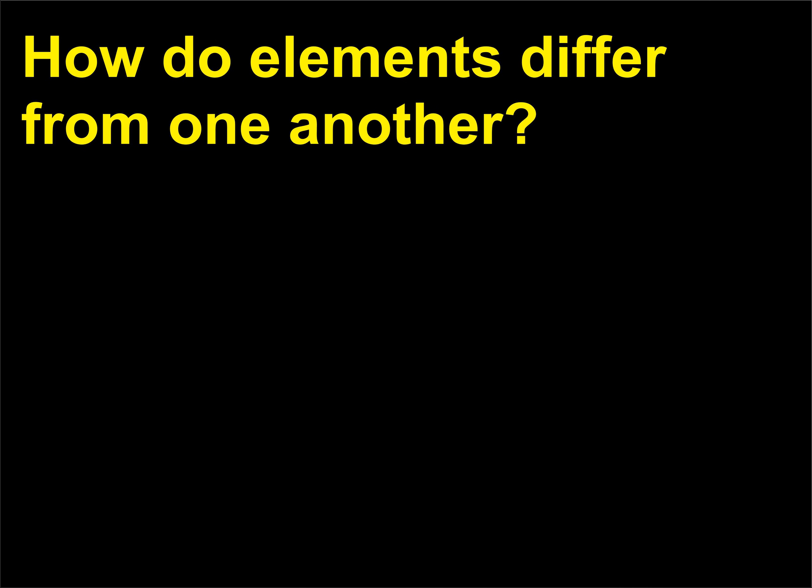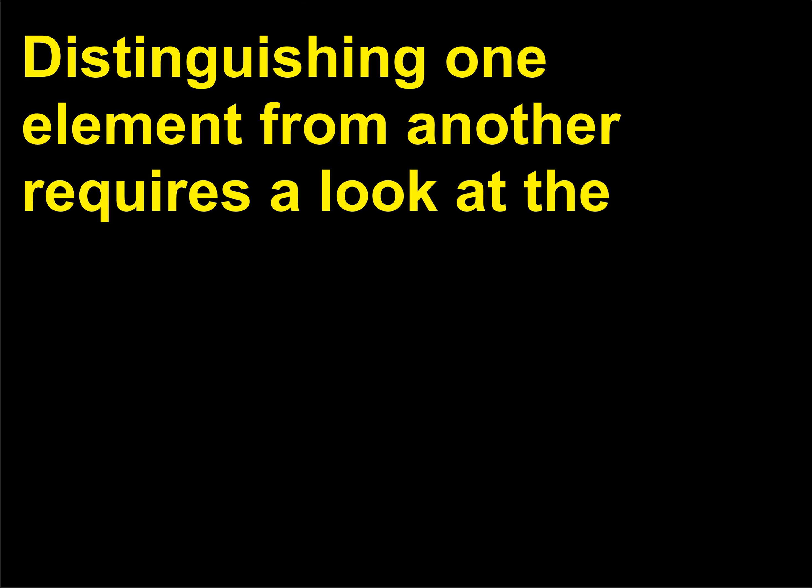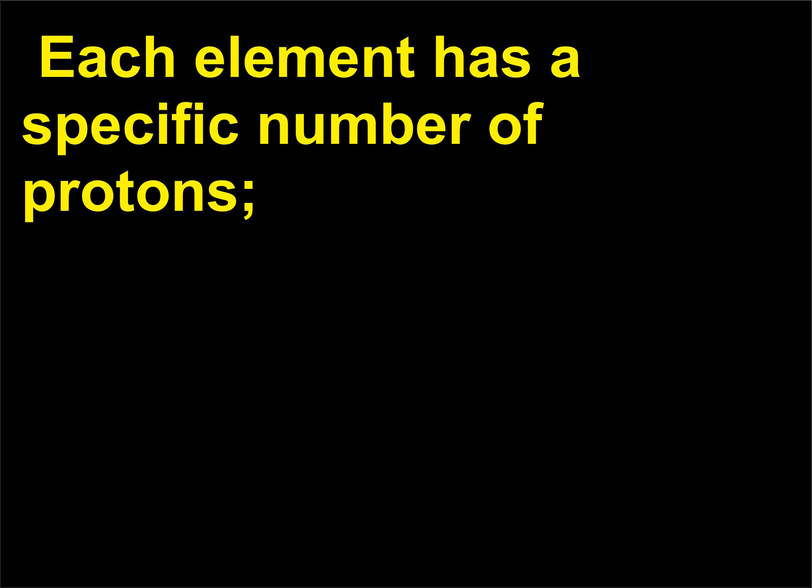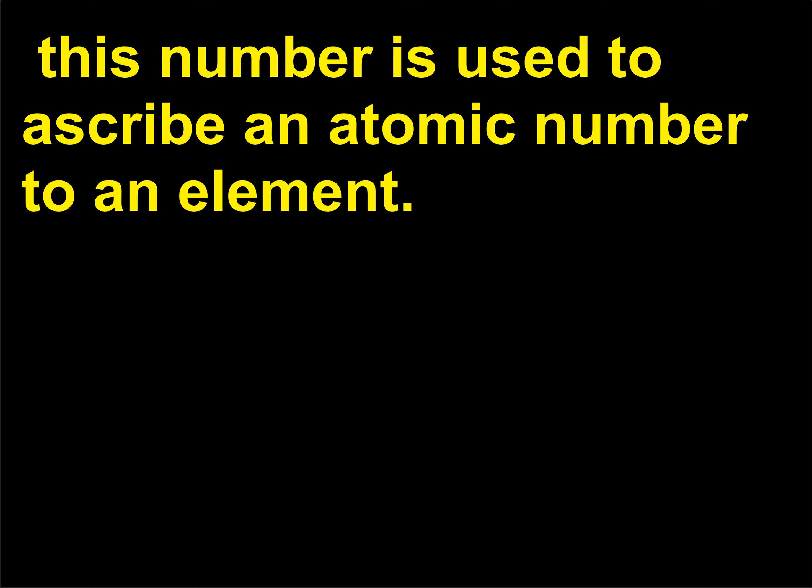How do elements differ from one another? Distinguishing one element from another requires a look at the subatomic particles of an atom — the protons, neutrons, and electrons. Each element has a specific number of protons, and this number is used to ascribe an atomic number to an element.